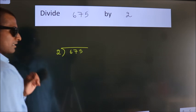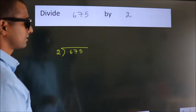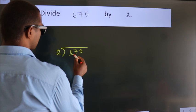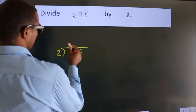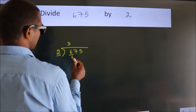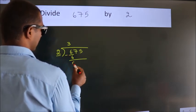This is step 1. Next, here we have 6, here 2. When do we get 6? In the 2 table, 2 threes, 6. Now, we subtract. We get 0.